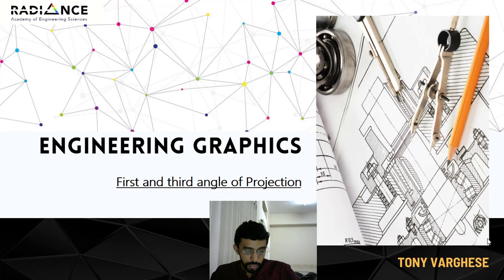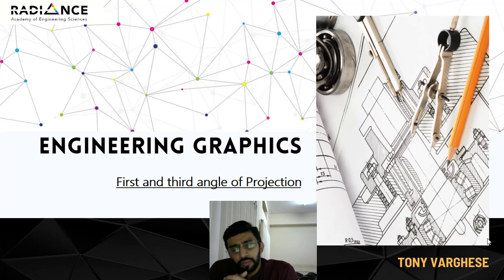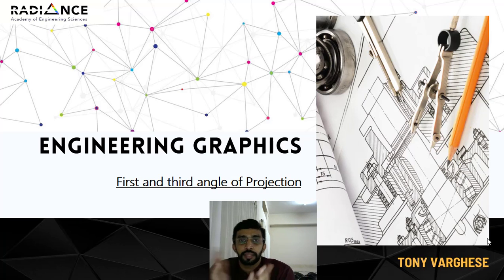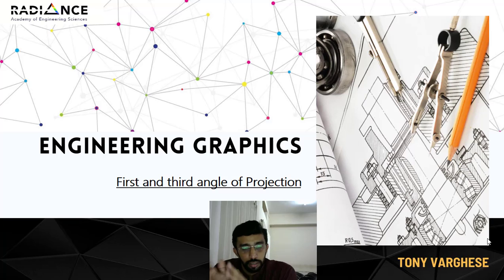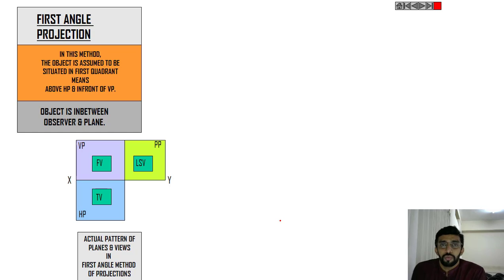In this class we will discuss about first angle and third angle projection in detail. Last class we discussed some fundamentals about projection and we have not started to draw anything yet. We last discussed about the difference between first angle and third angle projection. The object is placed in the first quadrant for first angle projection, and if the object is in the third quadrant then we follow third angle projection.